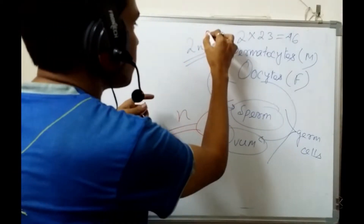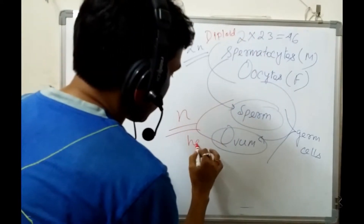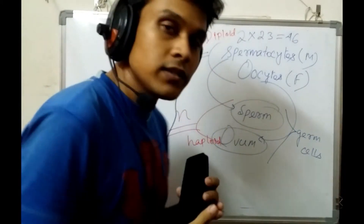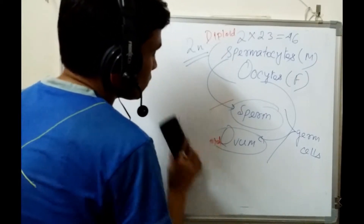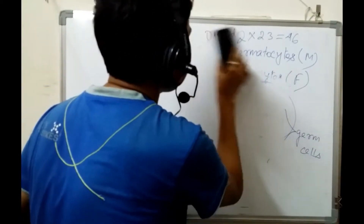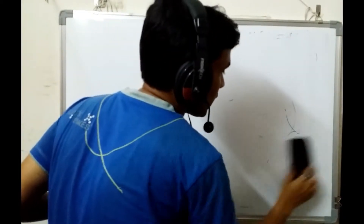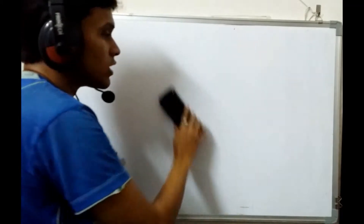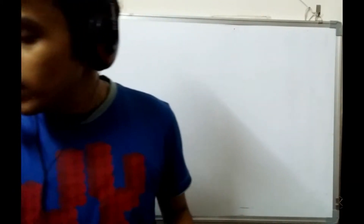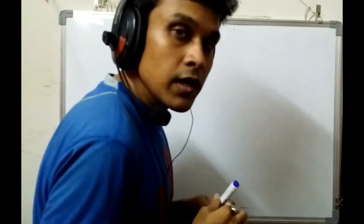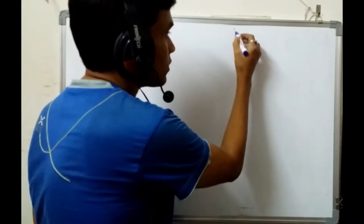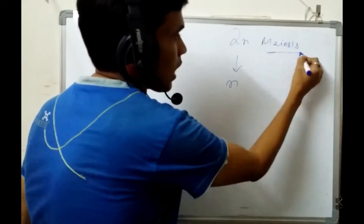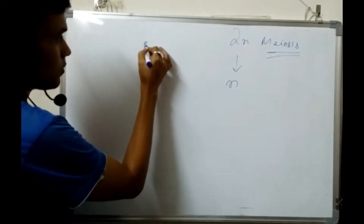Spermatocytes and oocytes are diploid (2N), while sperm and ovum are haploid (N). To understand how the haploid number is produced, you need to understand meiotic cell division. Mitotic cell division maintains the 2N number, whereas meiotic cell division decreases the chromosome number from 2N to N.